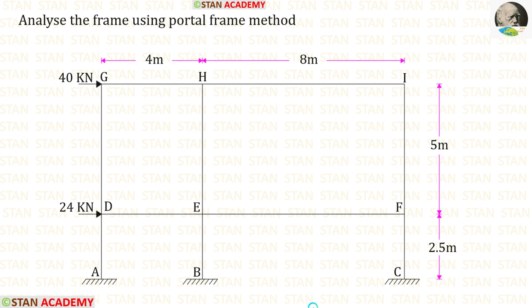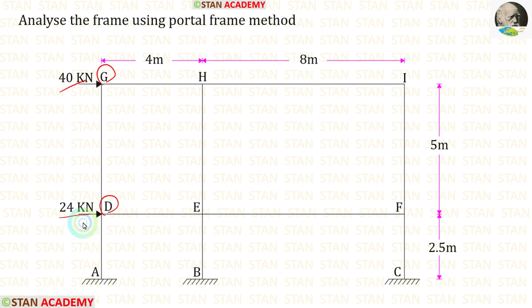Today we are going to analyze this frame using the portal frame method. In this frame there are two lateral point loads: at point G we have a load of 40 kilo Newtons, and at point D we have a load of 24 kilo Newtons.